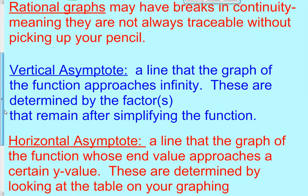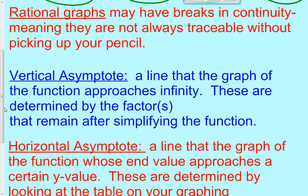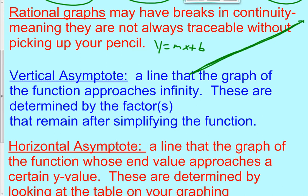Rational graphs are very unique in that they may have breaks in continuity, meaning they are not always traceable without picking up your pencil. If you graph a line y equals mx plus b, a linear function, you can trace it without ever lifting up your pencil — you can go forever to the right and left. It doesn't have any breaks in continuity. The same thing with parabolas — y equals x squared — you could draw that without ever lifting up your pencil.